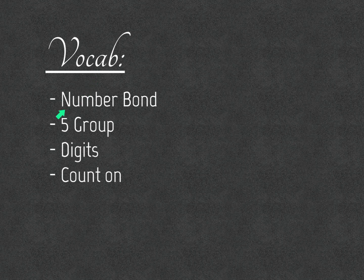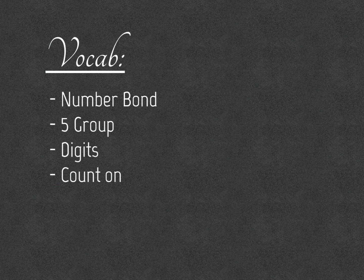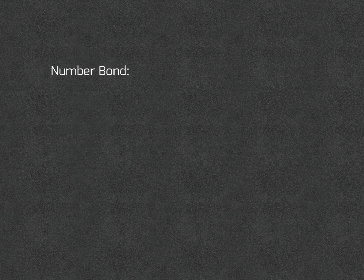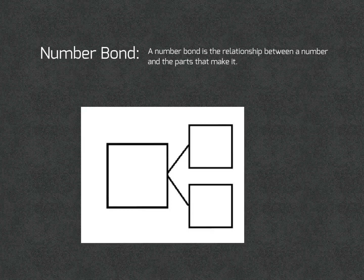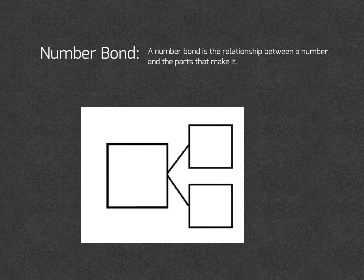Vocab: Number bond, five group, digits, and count on. Number bond: A number bond is the relationship between a number and the parts that make it. This diagram is an example of a number bond.